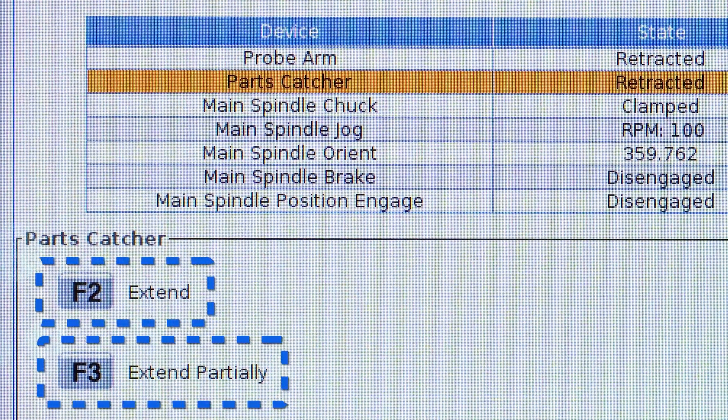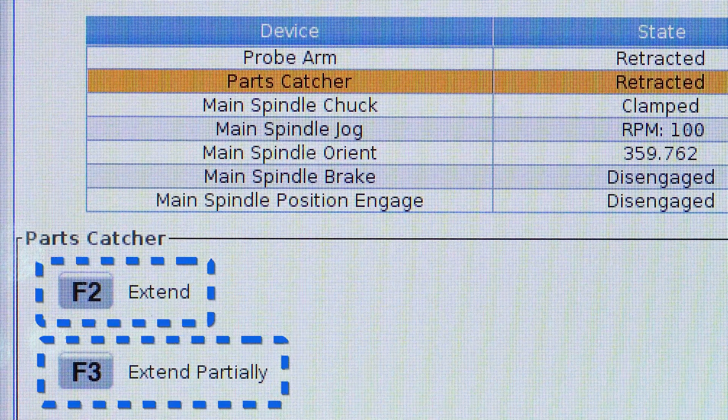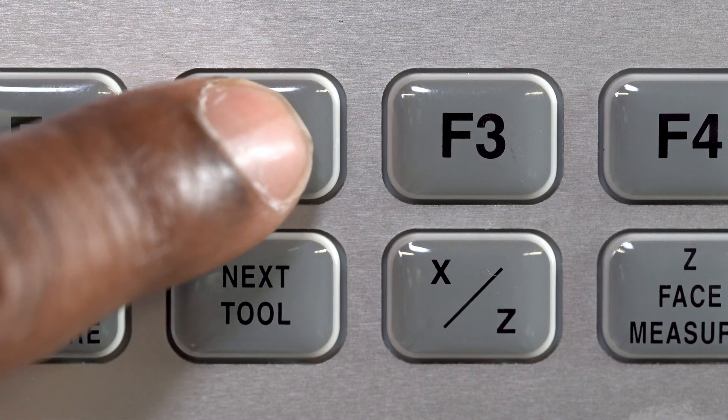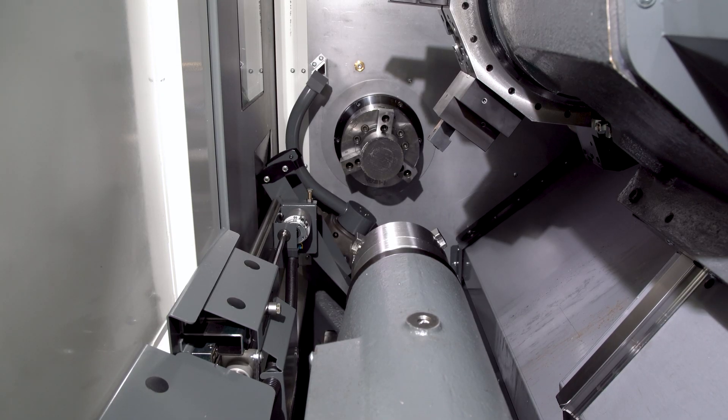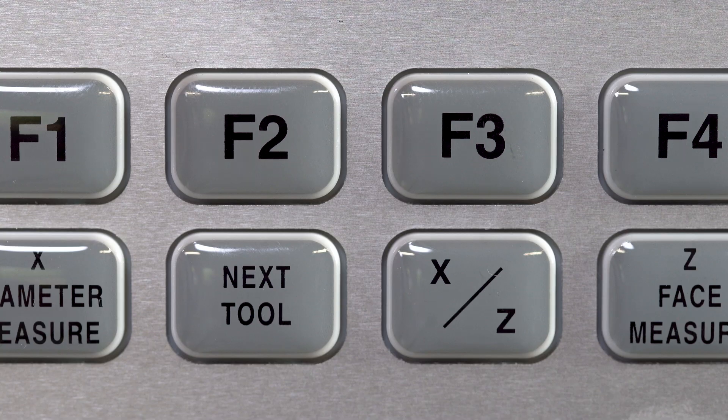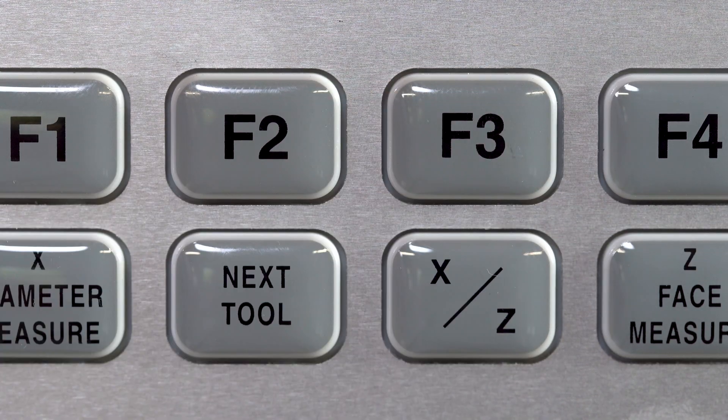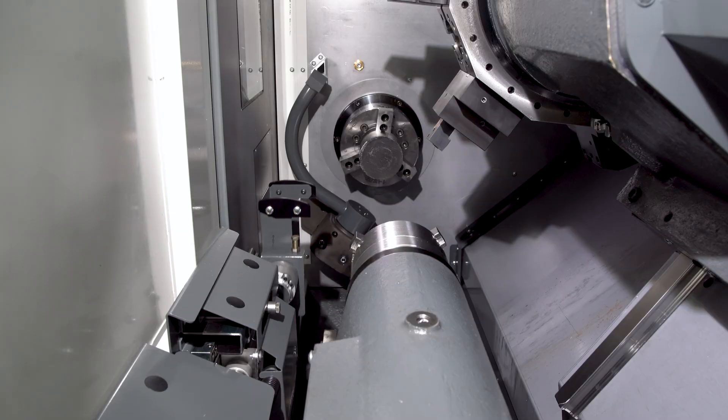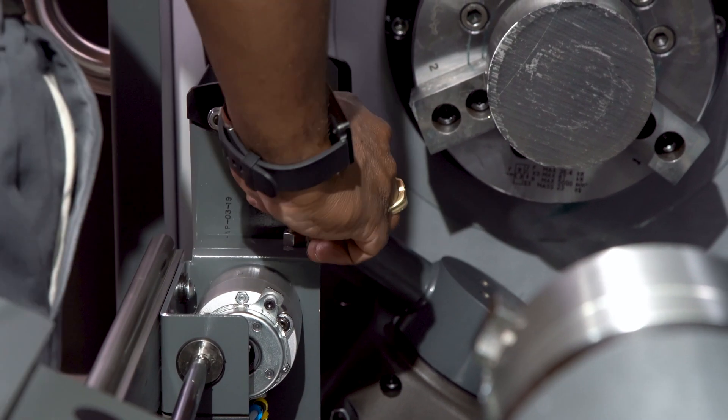F2 and F3 are the commands used to set up the parts catcher location. F2 extends the parts catcher and rotates the chute to catch the part. The primary function of the F3 key is to extend the chute and allow the operator to make adjustments to the parts catcher.